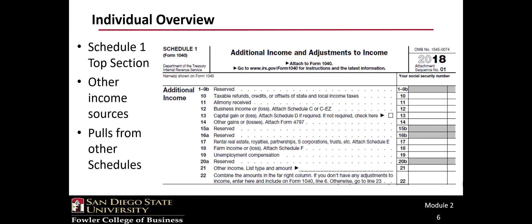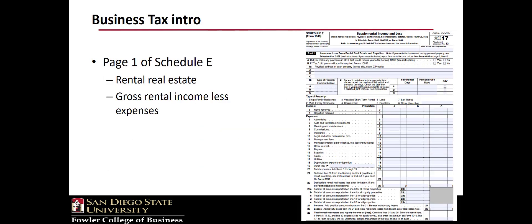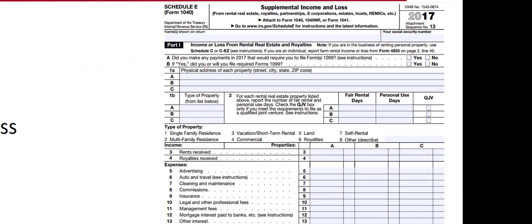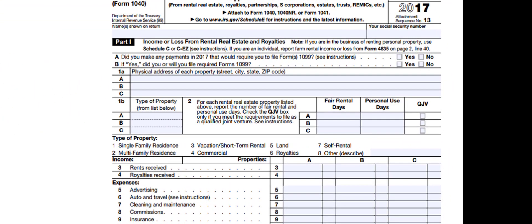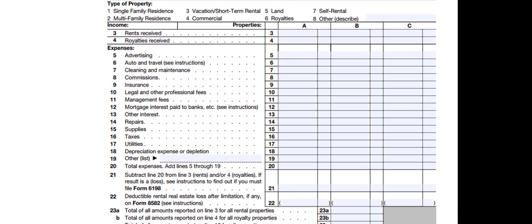If we skip back to the 1040, you will see that line 17 picks up a variety of income types, including income from S corporations, partnerships, and rental real estate. The 1040 cross-references to Schedule E. The first page of Schedule E is devoted to rental real estate — this is for direct ownership of rental property. If the real estate is owned by a flow-through entity like a partnership or an LLC, the income is reported on page two of Schedule E. Like Schedule C, the expenses of the business are reported there also.